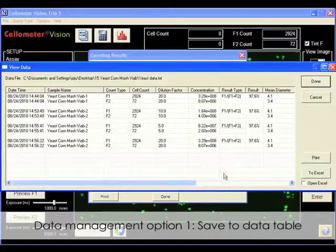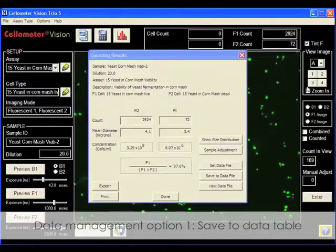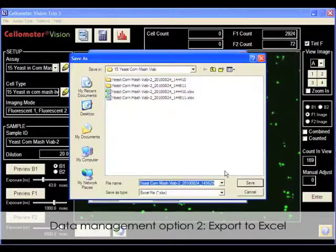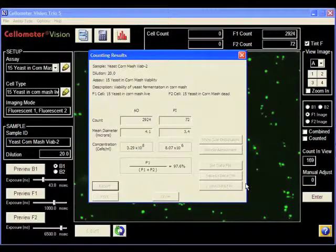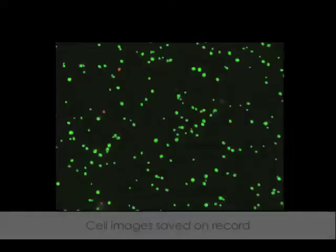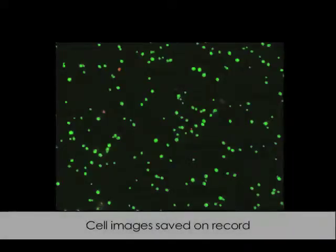Counting data is saved in a table for multiple samples. Export to Excel saves the information of each cell counted. Cell images are saved as a record for each sample.